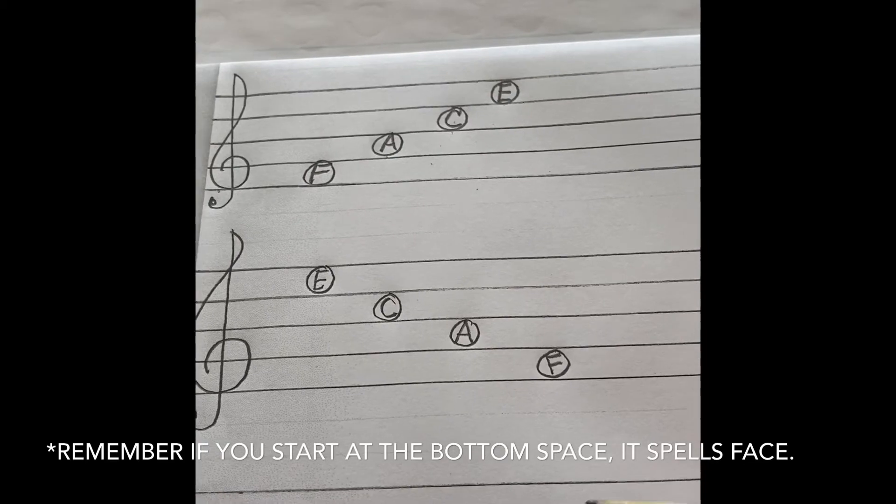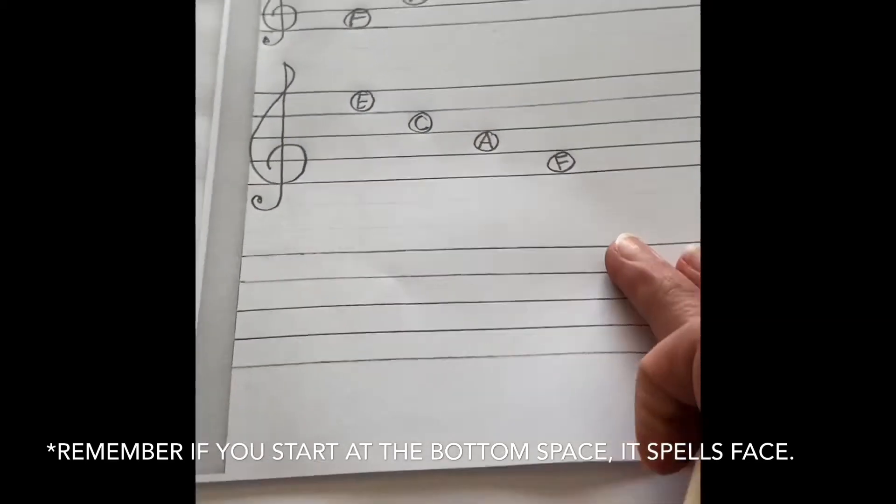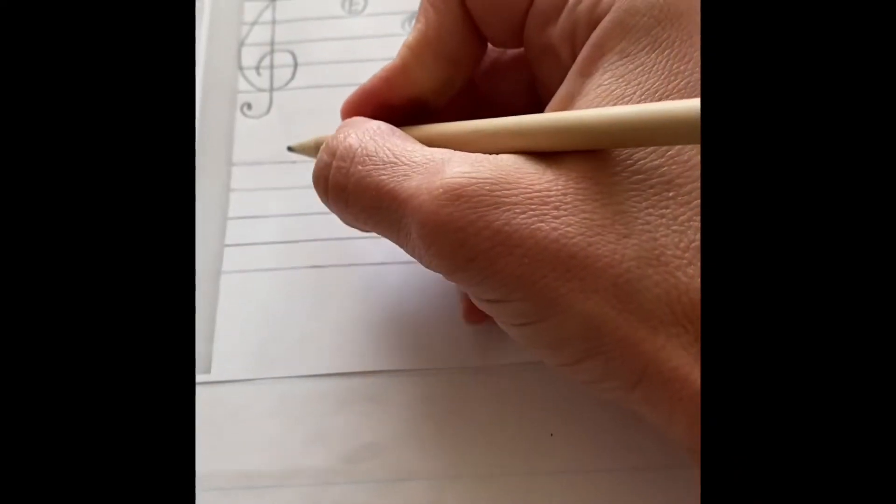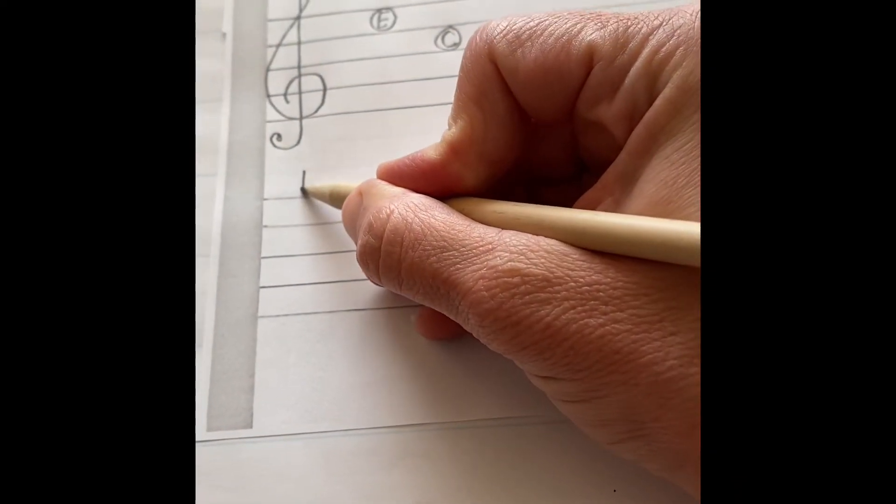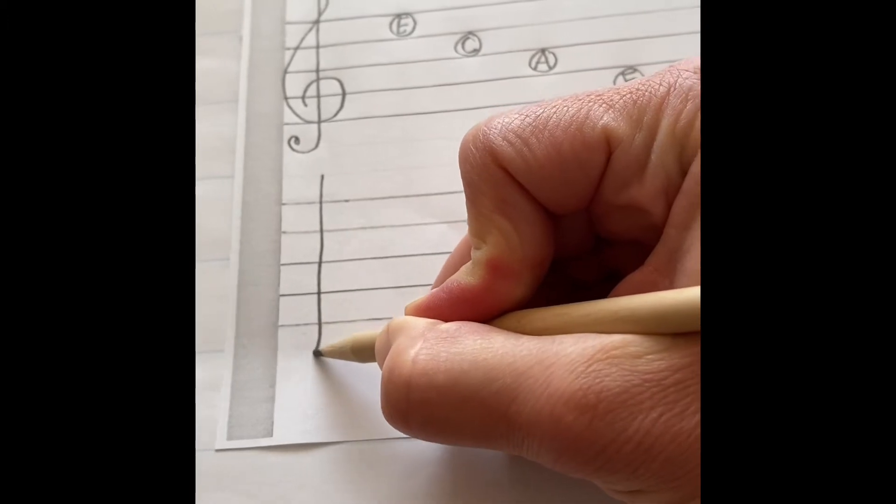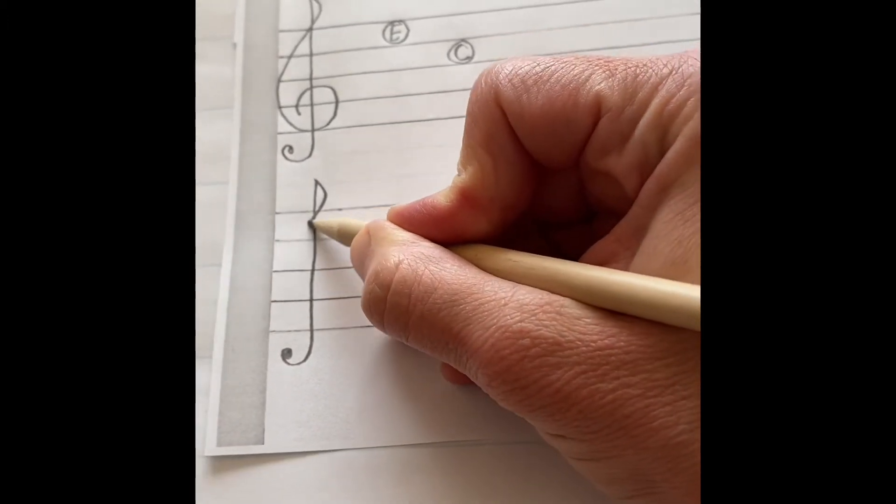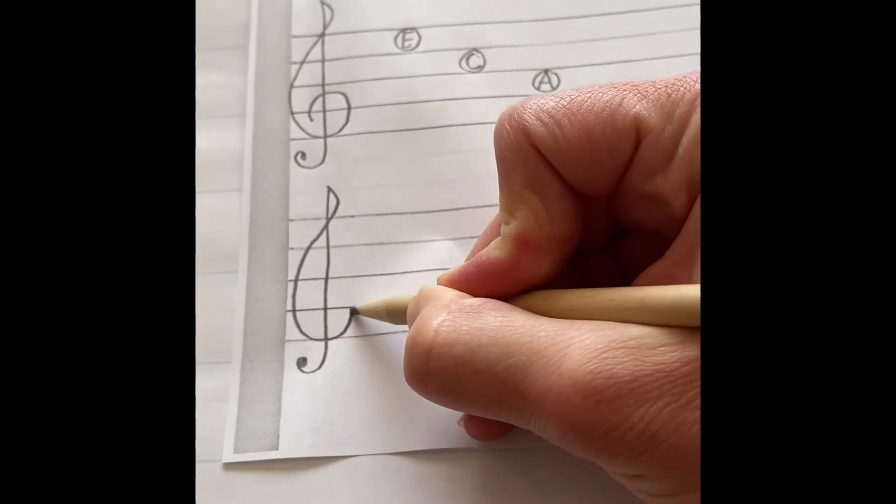I want you to take notice that on the very bottom space it's always an F, no matter if it's on the left side, the middle, or the right side. The same with the second space is always an A. The third space is always a C, and the final fourth space is always an E.